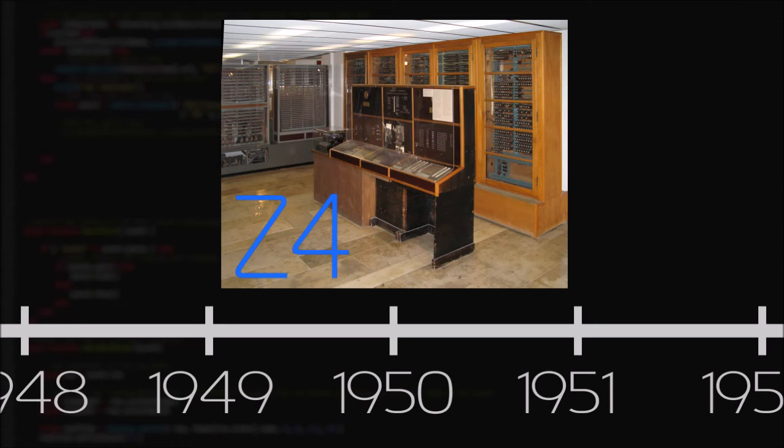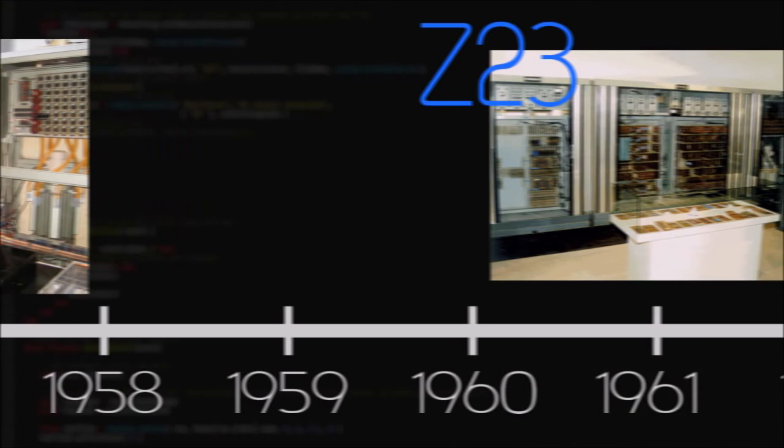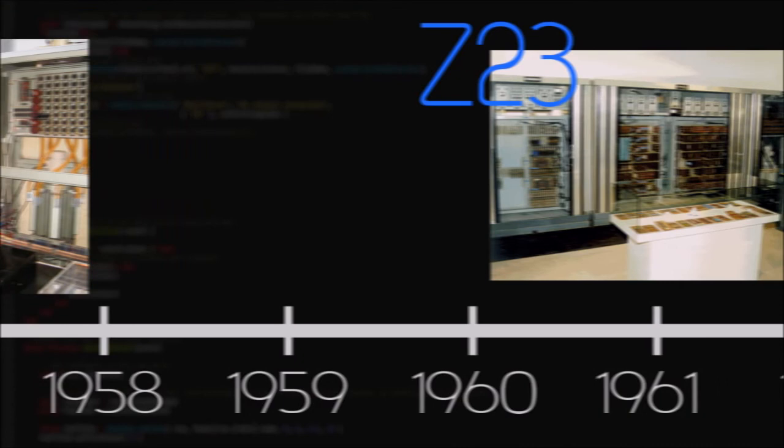After this, Zuse KG was successful, producing dozens more models, including the commercially successful Z23 that used transistors. The company was sold in 1962.